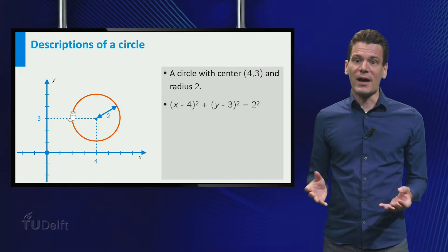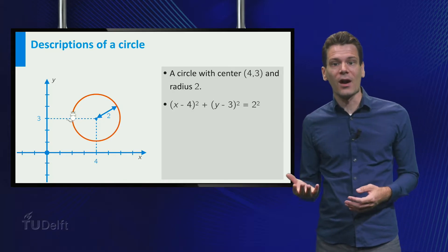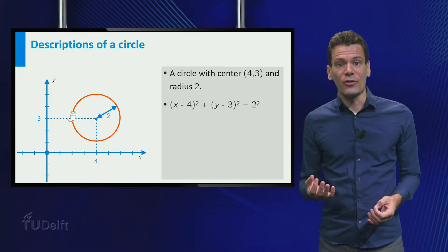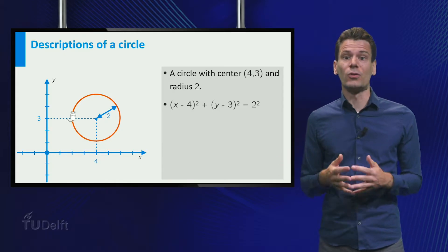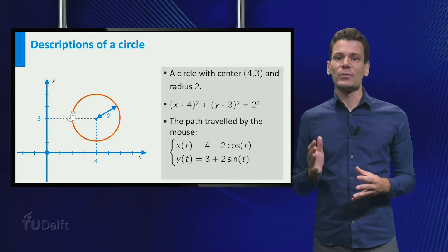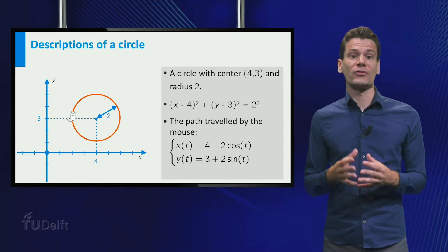The position of the mouse changes with time, so we can regard its x and y coordinates as functions of a time parameter t. These functions are appropriately called the coordinate functions of the parametrization. In this case, we can describe these functions by the formulas on the slide.